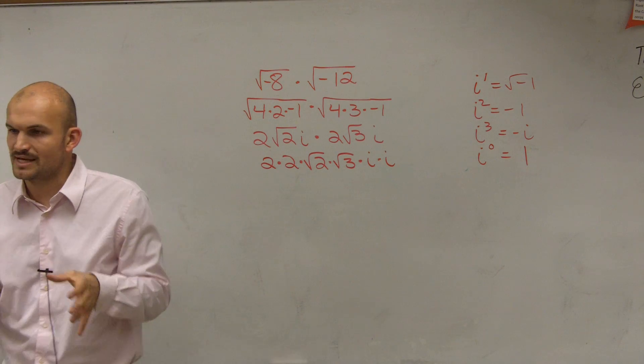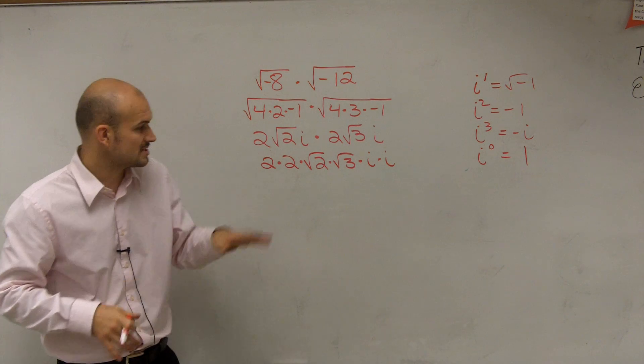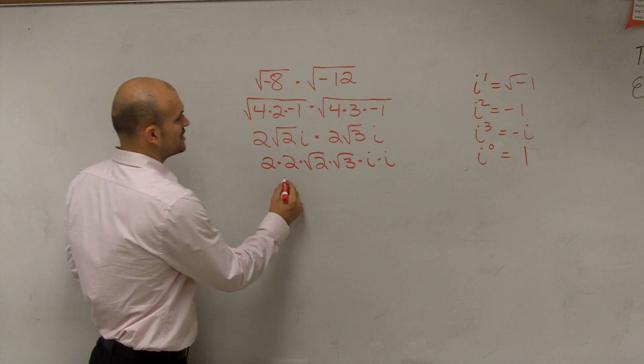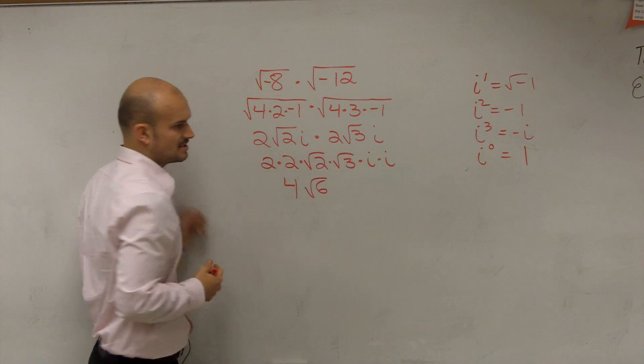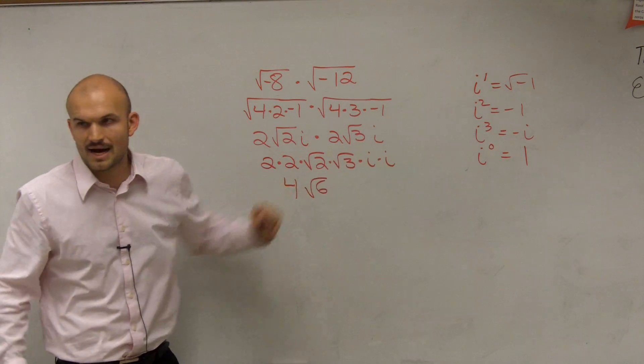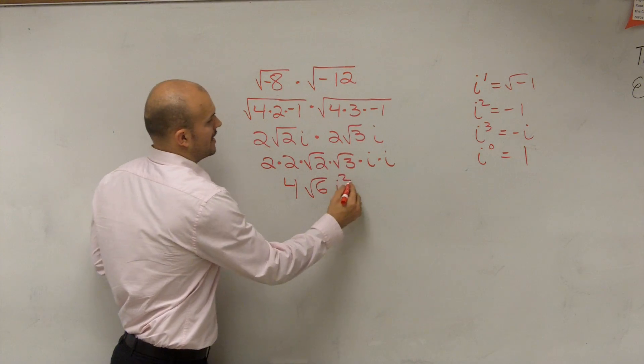When we do a multiplication, it's going to be very similar to our variables, except 2 times 2 is 4, square root of 2 times square root of 3 is square root of 6, and then i times i is i squared.